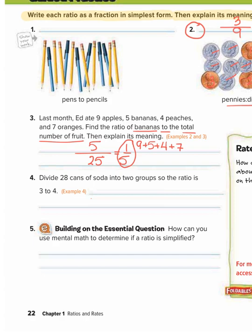Next, we're going to do number four. This says divide 28 cans of soda into two groups so the ratio is three to four. So we want a ratio of three to four, but we want it to add up to 28 cans. So I'm going to make a table with a bunch of ratios equal to three fourths.